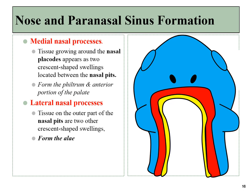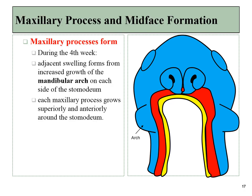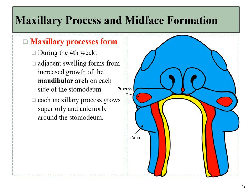At the same time that the mandible is forming, tissue grows around the nose, including a pair of medial nasal processes and a pair of lateral nasal processes. The lateral nasal processes will form the alae of the nose, but the medial nasal processes will form a number of structures we care about, including the primary palate and the philtrum. Coming off the first branchial arch — the mandibular arch — are a couple of bulges called the maxillary processes. Note that they're called processes; they're not their own arch. The first arch is the mandibular arch.